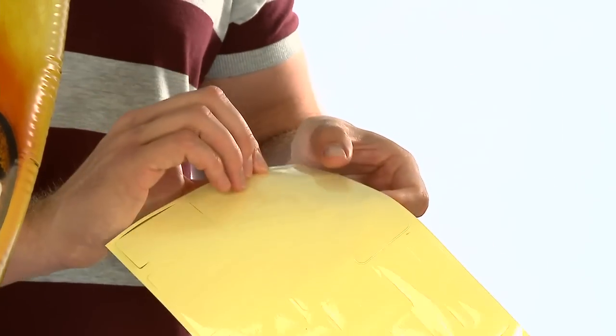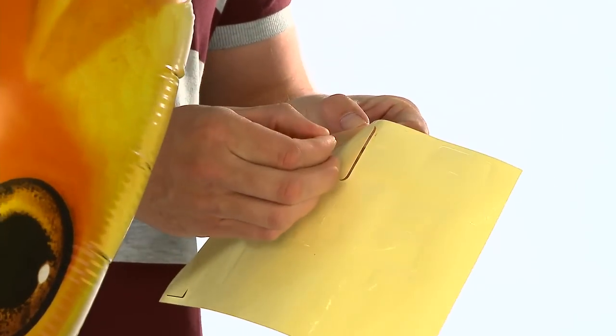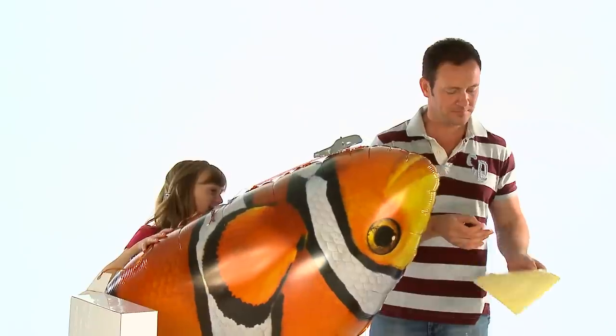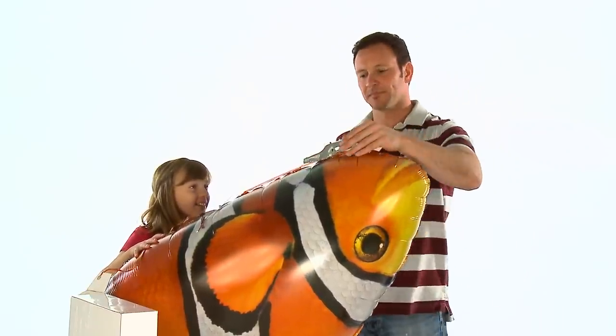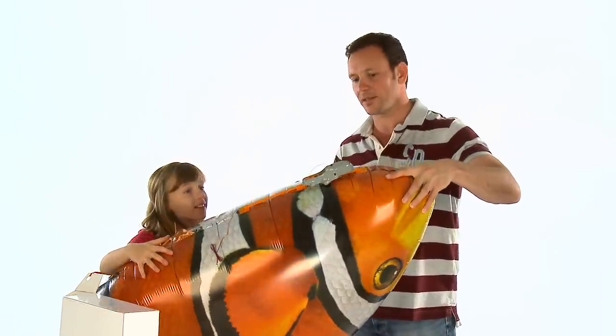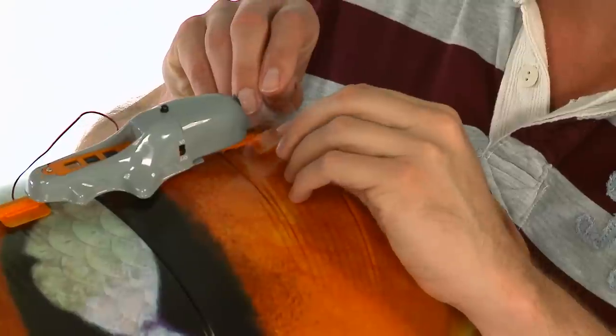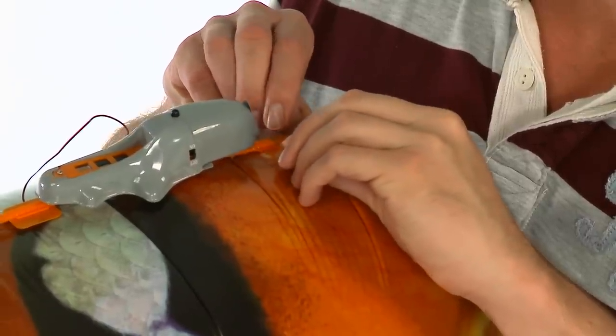You now need to place clear tape over the track tabs to keep them secure. When applying the clear tape, be careful not to cover the pod track as it may prevent the pod from moving smoothly down the track.